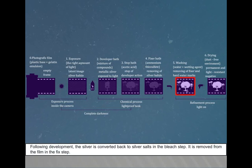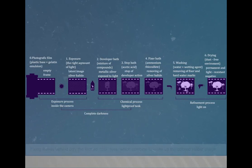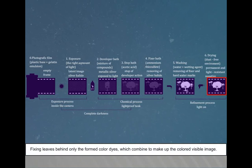Following development, the silver is converted back to silver salts in the bleach step. It is removed from the film in the fixed step. Fixing leaves behind only the formed colored dyes, which combine to make up the colored visible image.